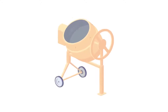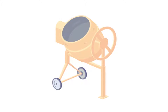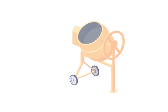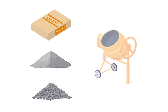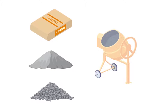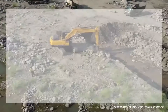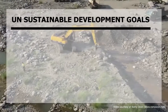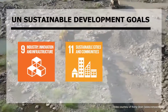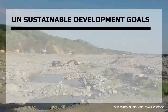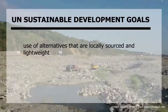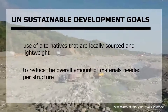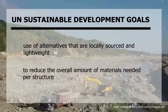Being one of the most used construction materials, concrete is heavily dependent on the extraction and production of its raw materials — namely cement, sand, and gravel — which makes it a prime material for replacement studies with more sustainable materials. In keeping with the Sustainable Development Goals, especially Goals 9, 11, and 12, the industry could look into alternatives that are locally sourced and lightweight, which could also possibly reduce the overall amount of materials needed per structure.